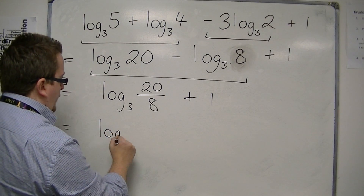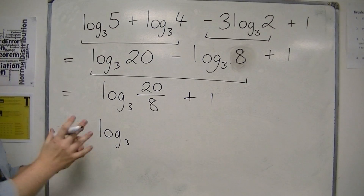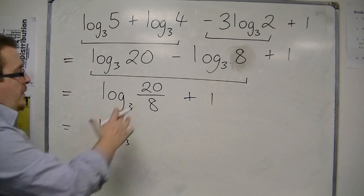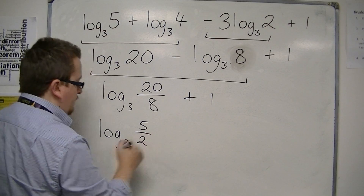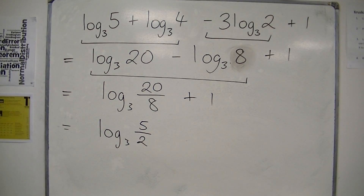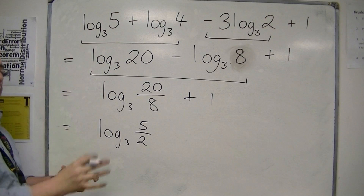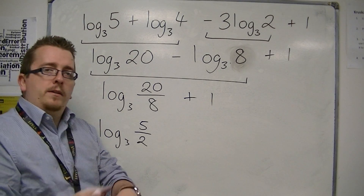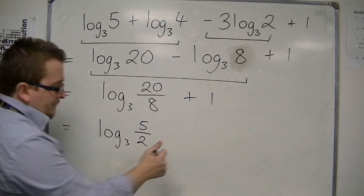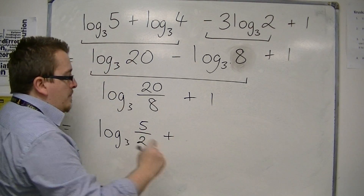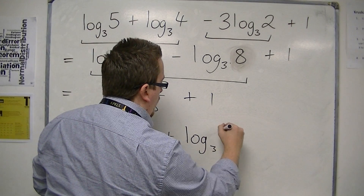Now, let's simplify that fraction: 20 over 8 — both divisible by 4 — so that's 5 over 2. So log base 3 of 5 halves, plus this 1.